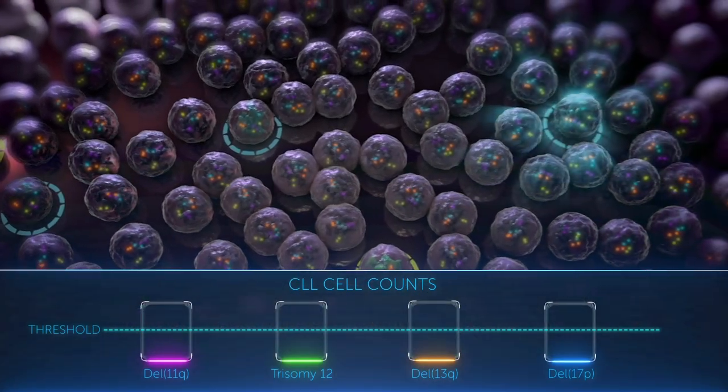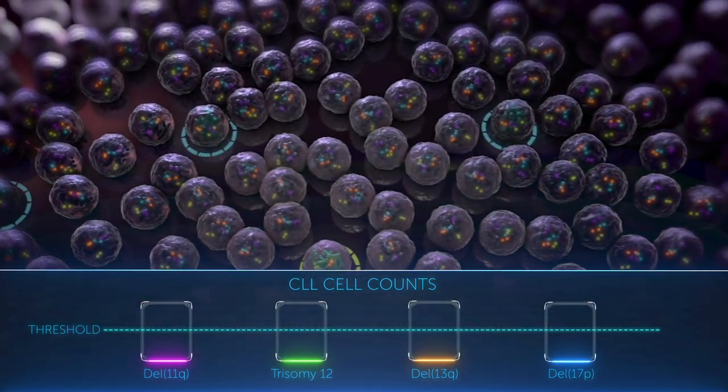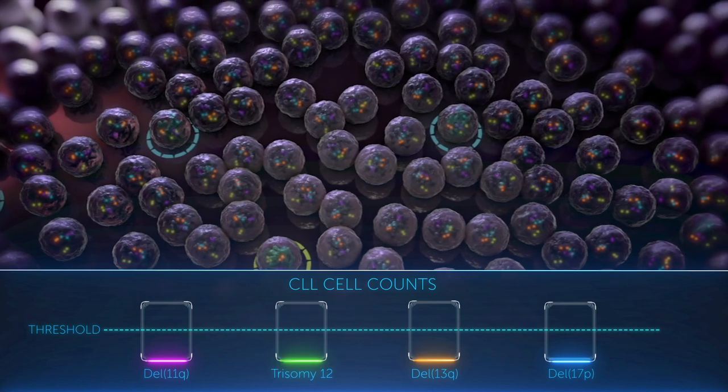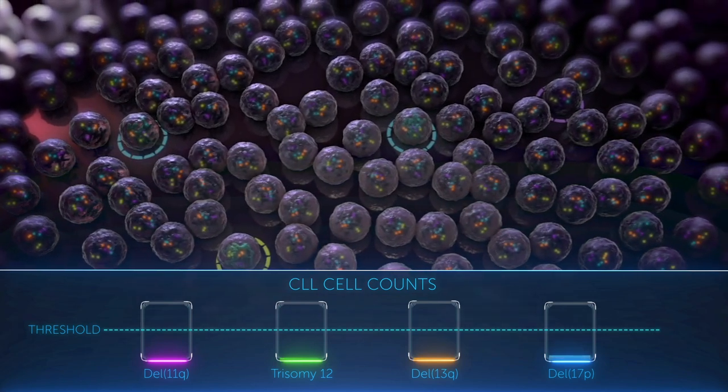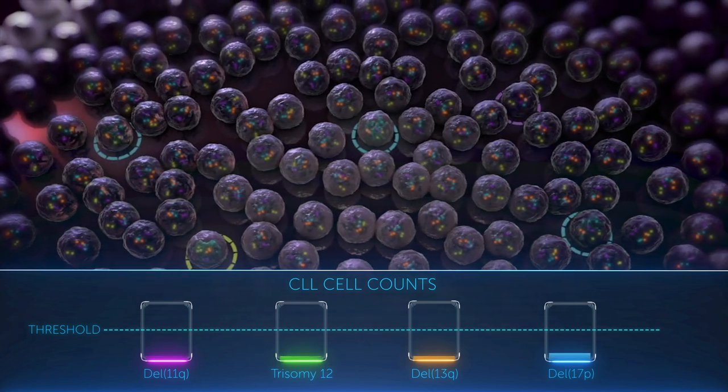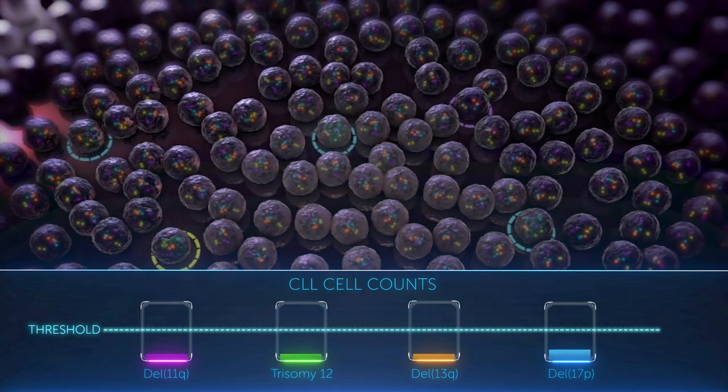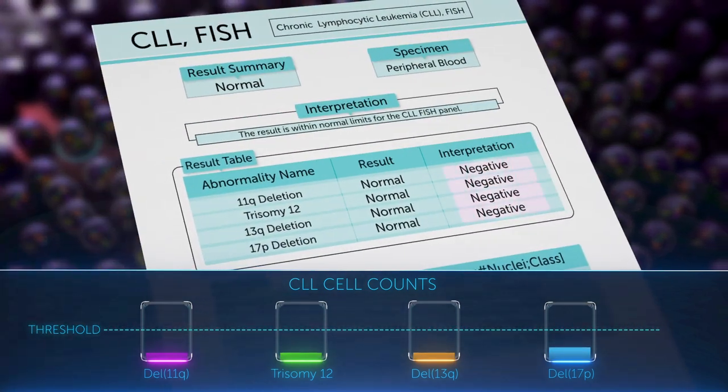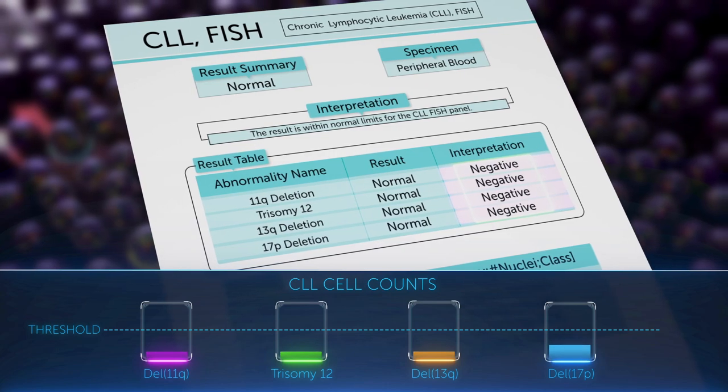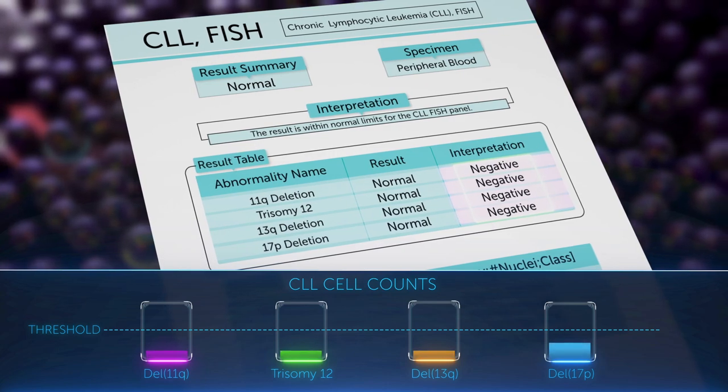A positive test result is determined when the number of cells that are missing regions 11q, 13q, or 17p, or that possess an additional copy of chromosome 12, reaches a clinically relevant threshold. The test result is considered negative if the number of subclones with a specific alteration falls below the threshold.